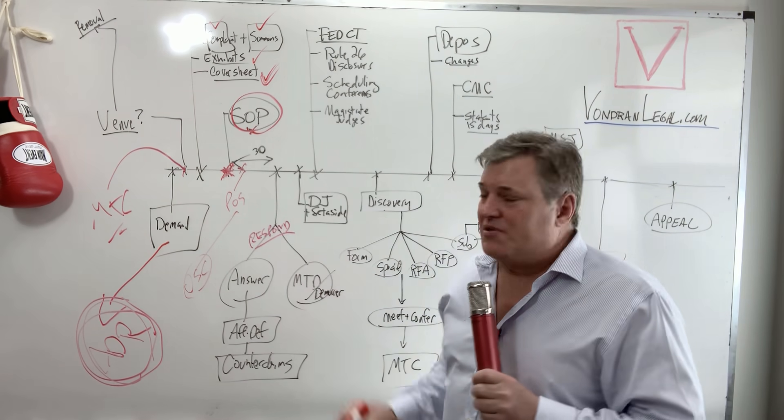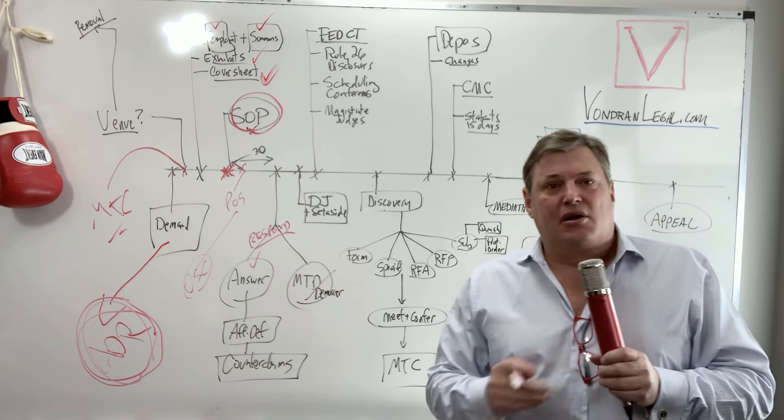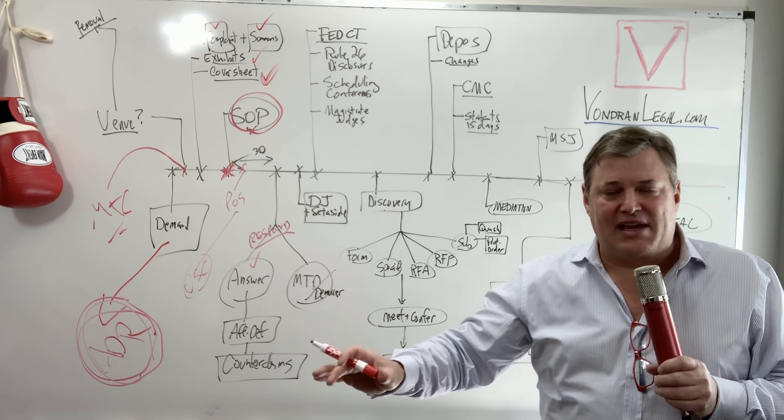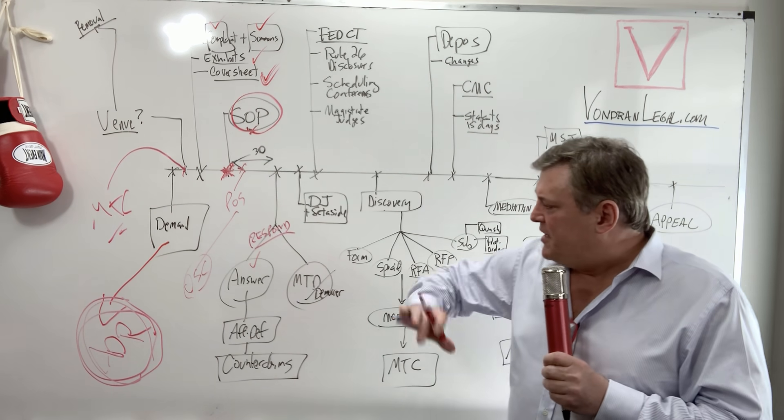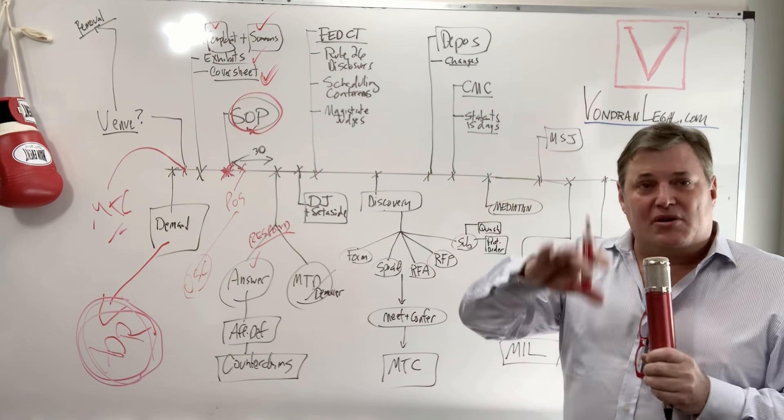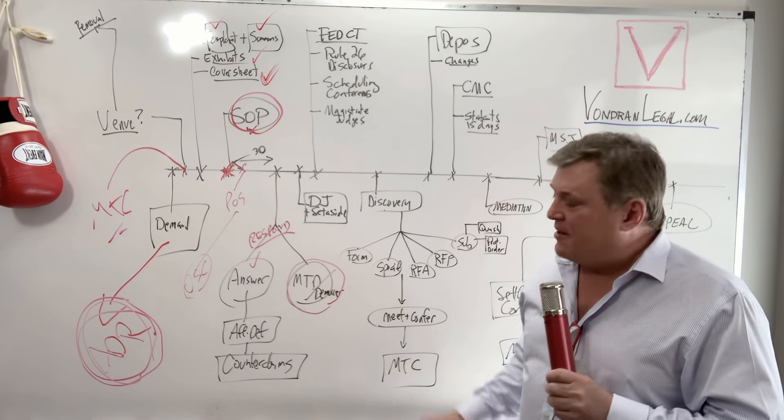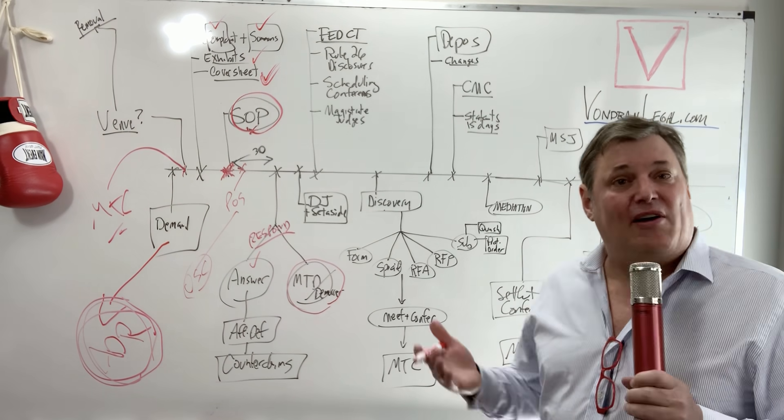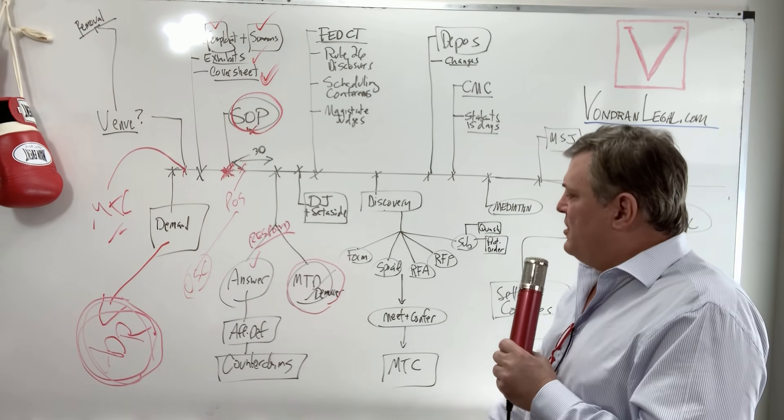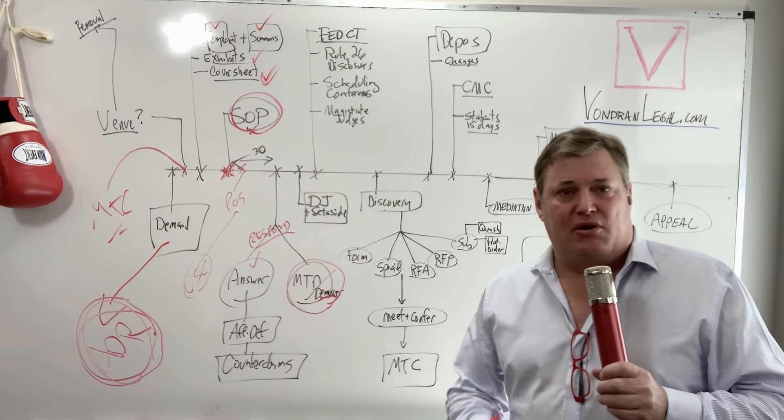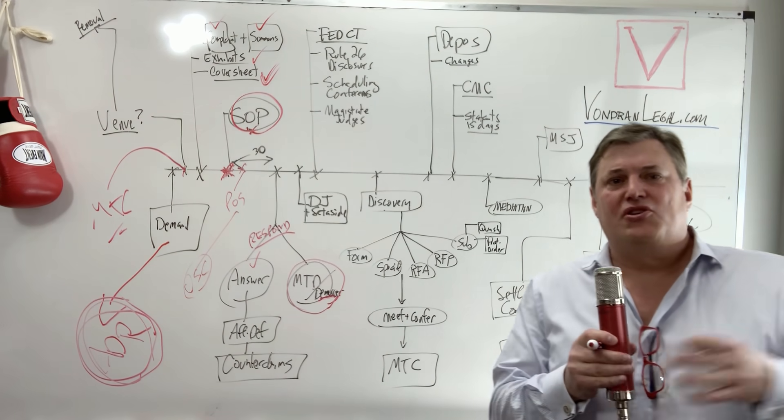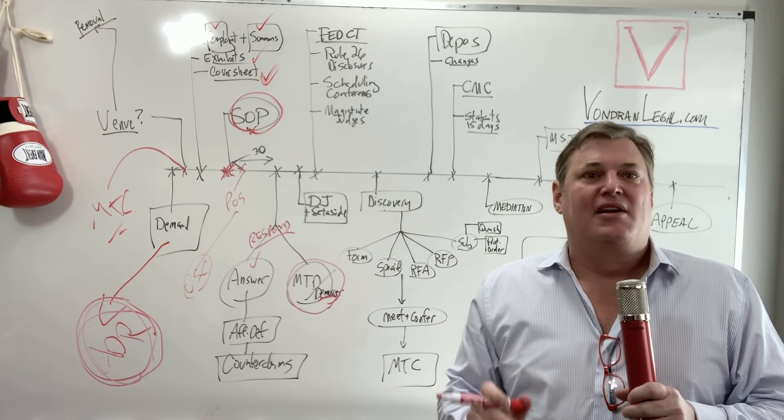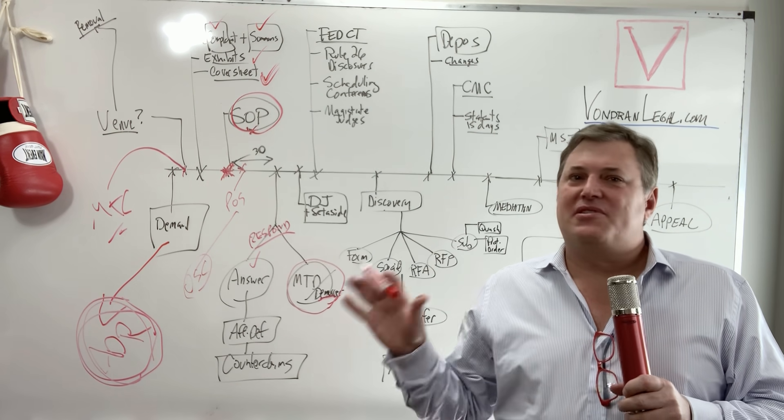Now there's different ways to respond. You may respond with saying, you know, let's just file an answer. We will deny specifically generally deny all the allegations. And let's just move it into litigation. The other alternative is to file what's called a motion to dismiss if you're in federal court. It's called a motion to dismiss rule 12b is your relevant rule. If you're in state court, you're looking at the demurrer.